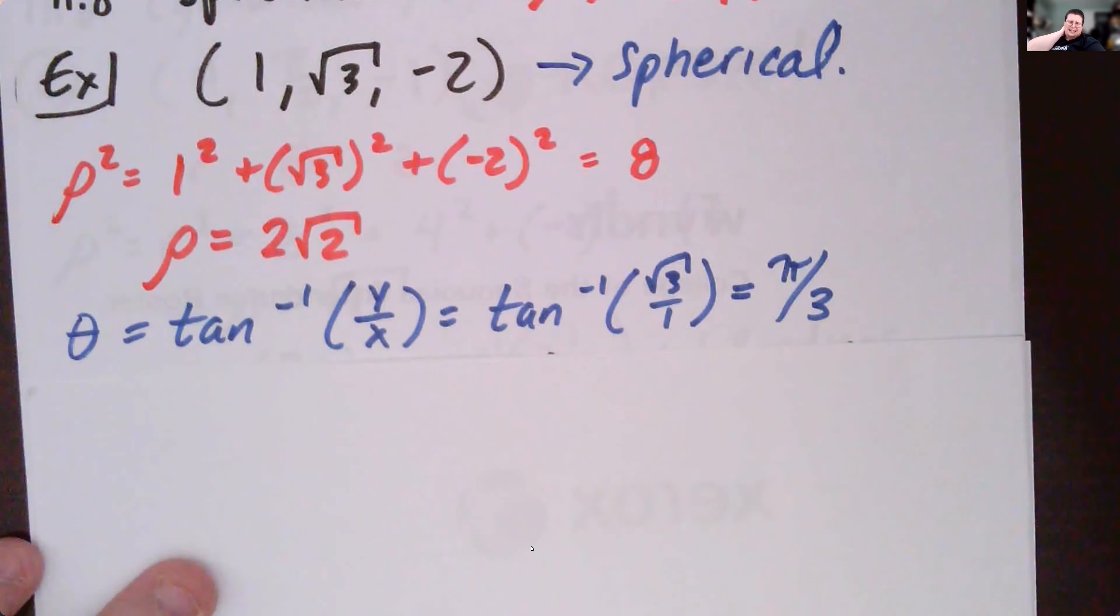Theta still stays tangent inverse y over x. So we plug that in here, we get the pi over three that we had before. Tangent inverse of root three is pi over three.